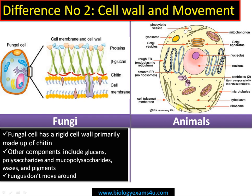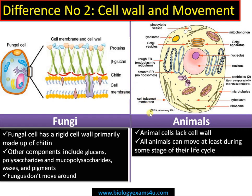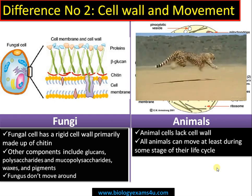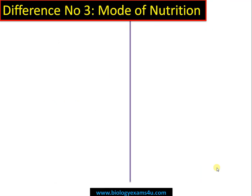Whereas in the case of animals, the outermost boundary is the cell membrane. Animal cells lack a cell wall, therefore they can move. All animals can move at least during some stage of their lifecycle — they need to move in search of food.